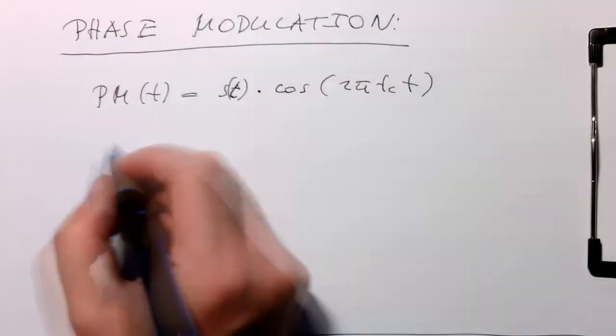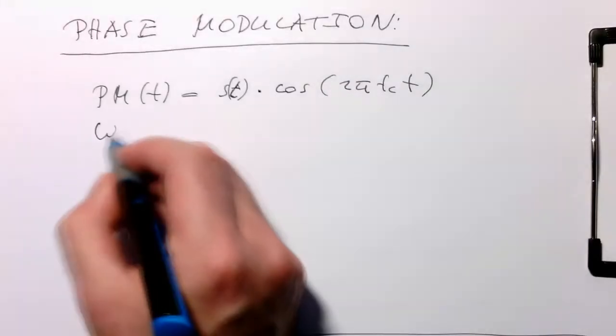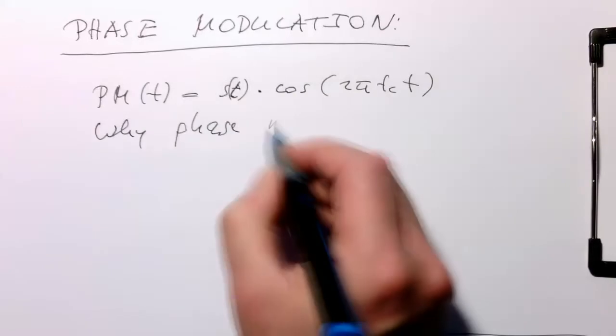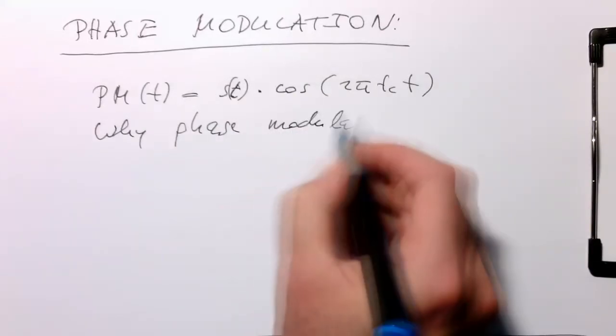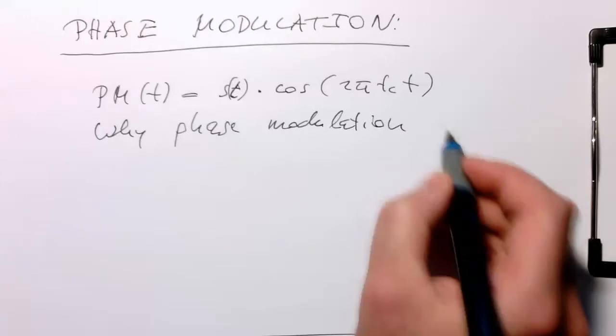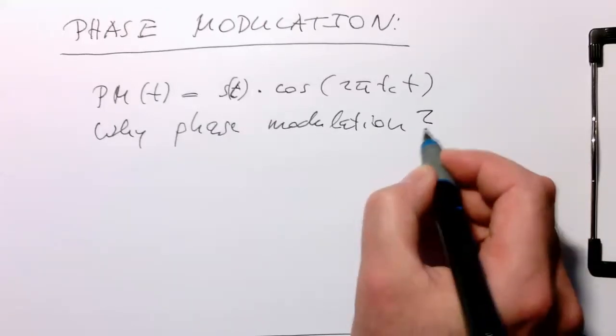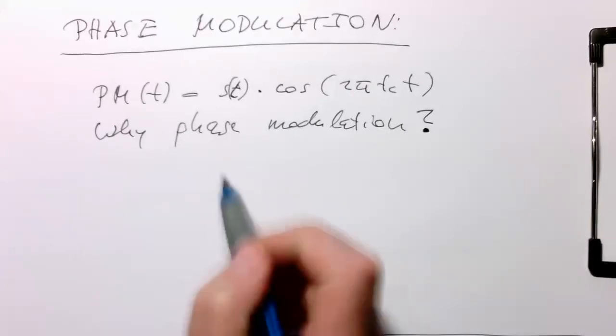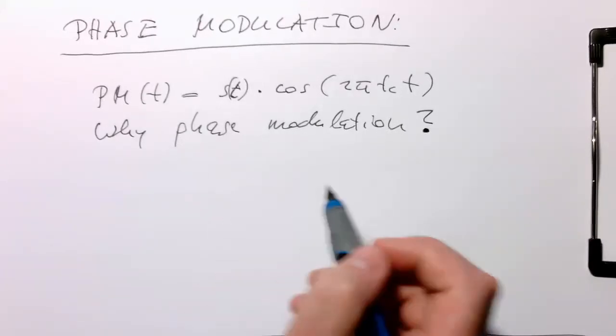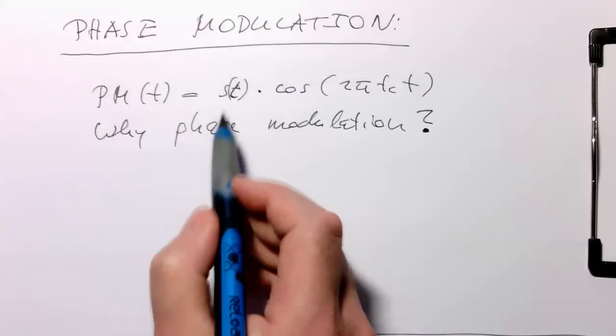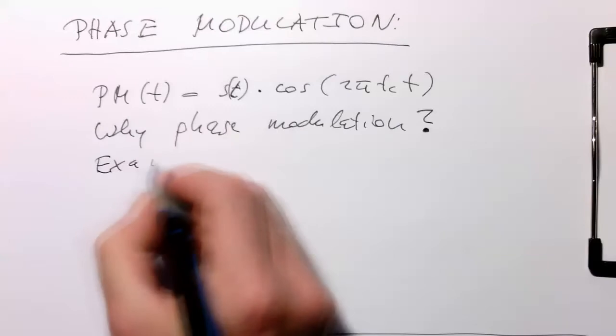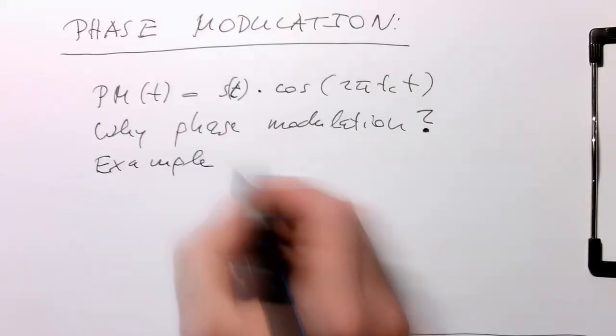The question is why is it called phase modulation? Some people call this also AM, the suppressed carrier. Why do we call this phase modulation? And it becomes clear if we just use an example, our example from before.